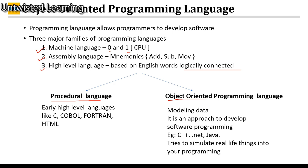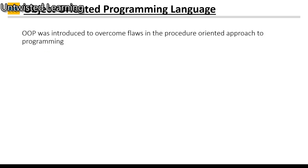Object oriented programming is based on modeling data. It is an approach to develop software — programming languages like C++, .NET, Java — and it basically tries to simulate real life things into your program. OOP was introduced to overcome flaws in the procedure oriented approach to programming.